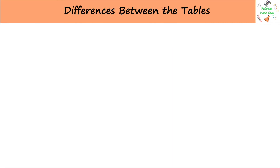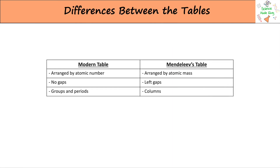There are a few key differences between the two tables. The Modern Table is arranged by atomic number, compared to Mendeleev's table which is arranged by atomic weight. Mendeleev also left gaps in his table for predictions and organised his table into columns.